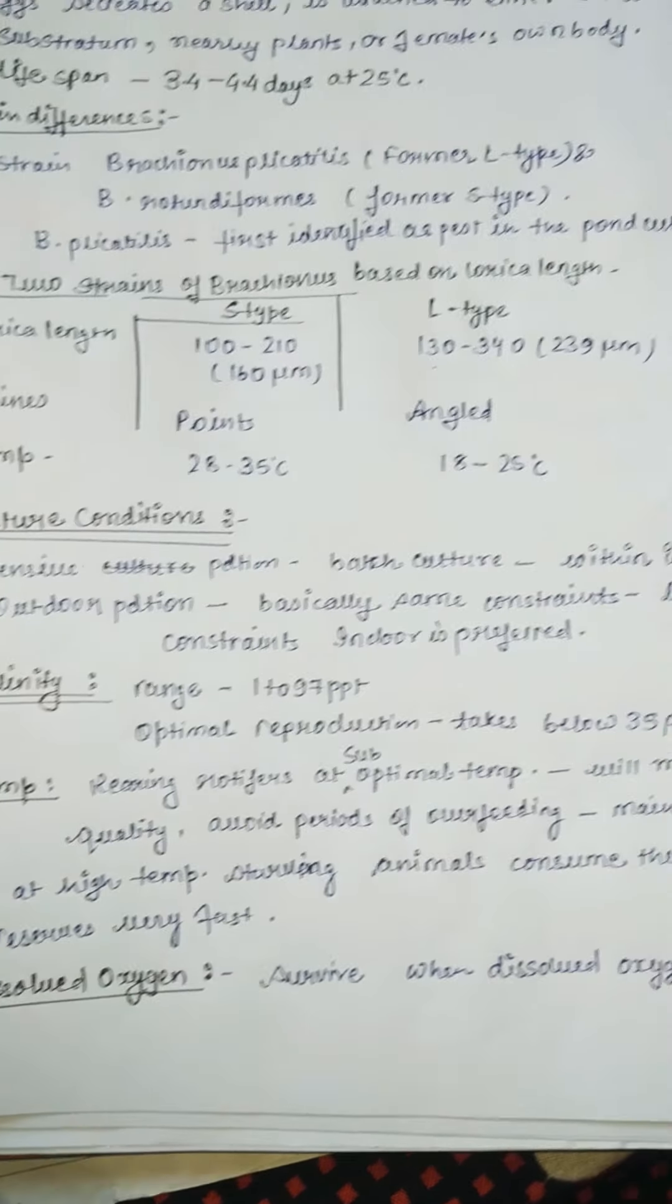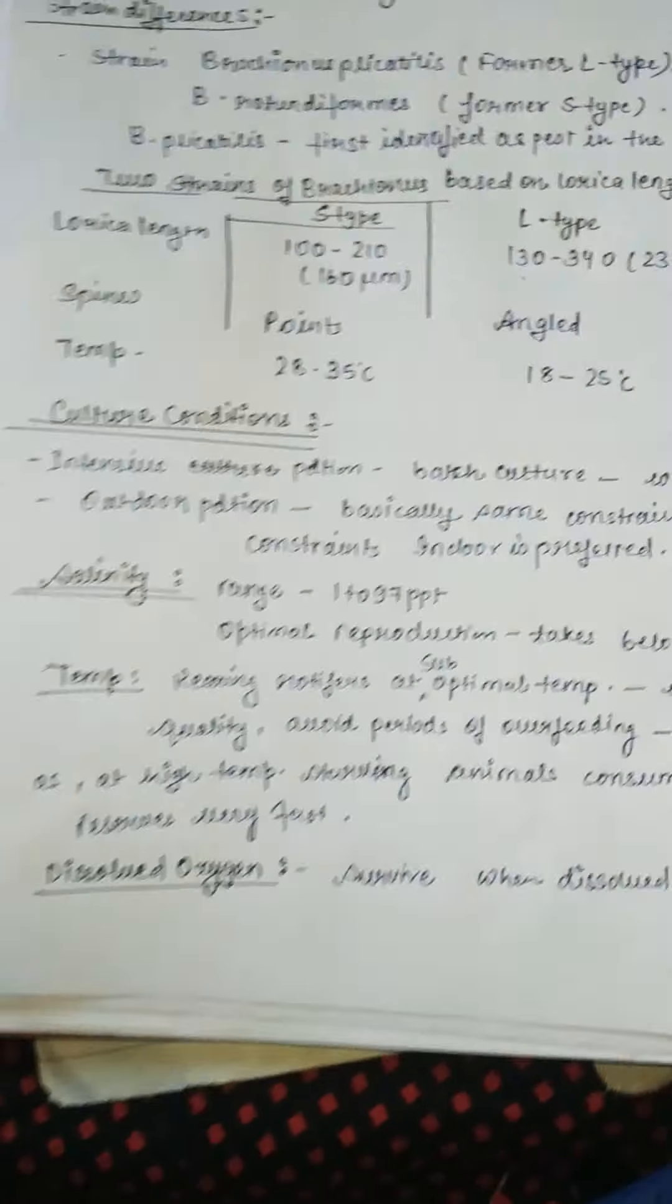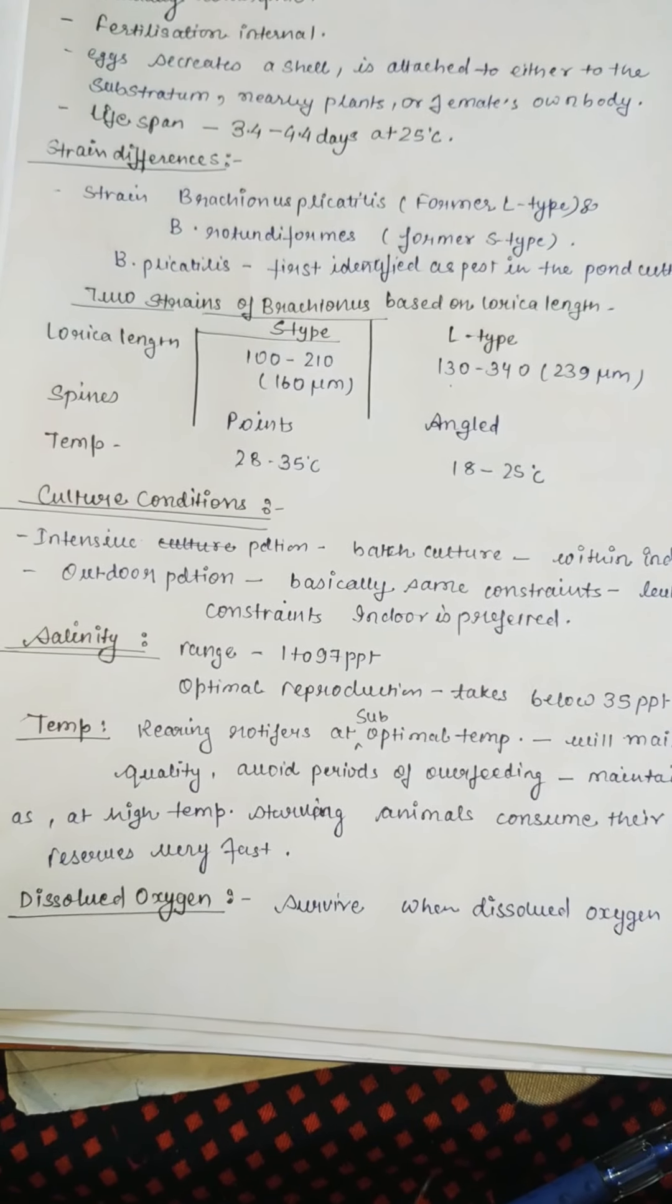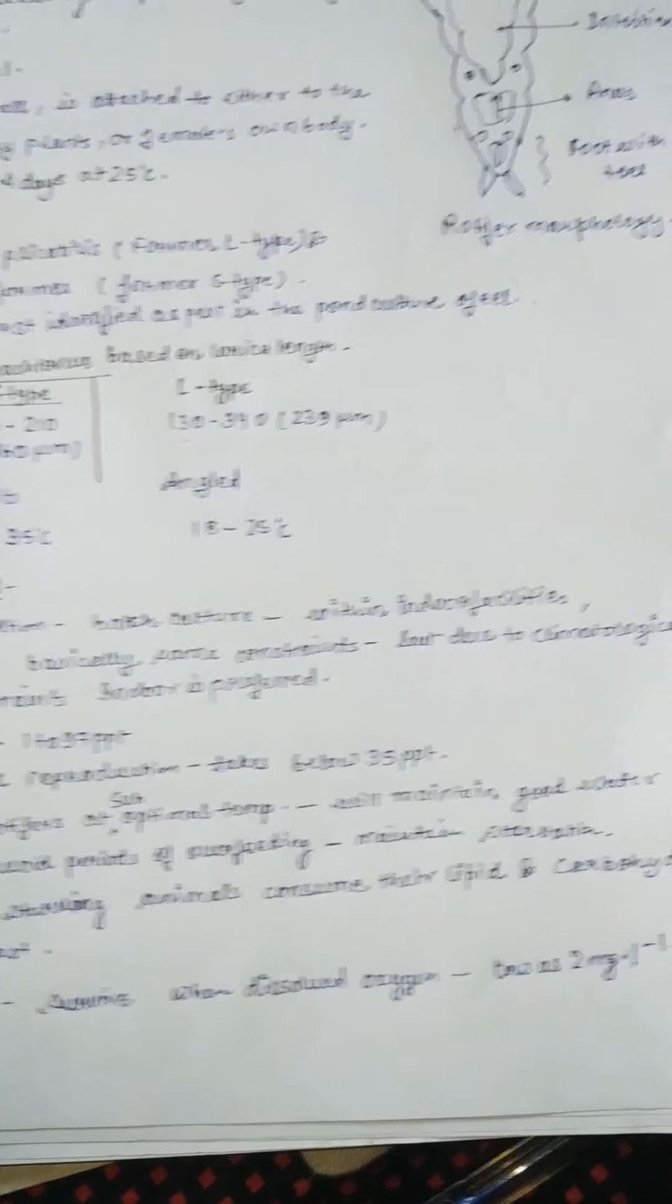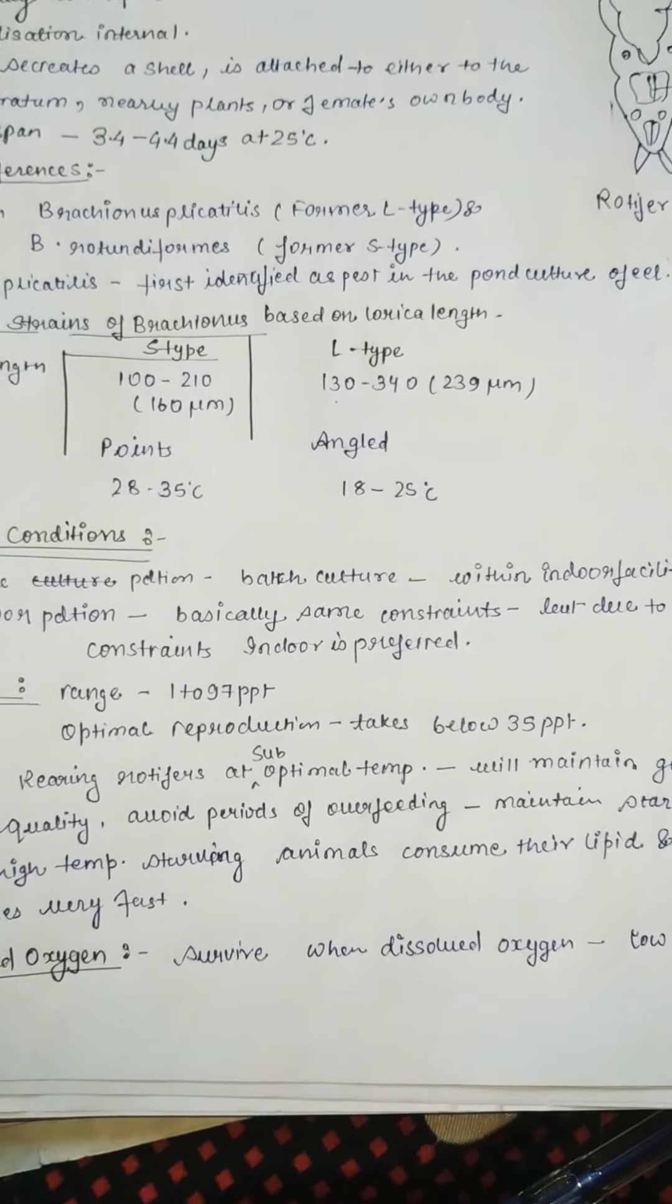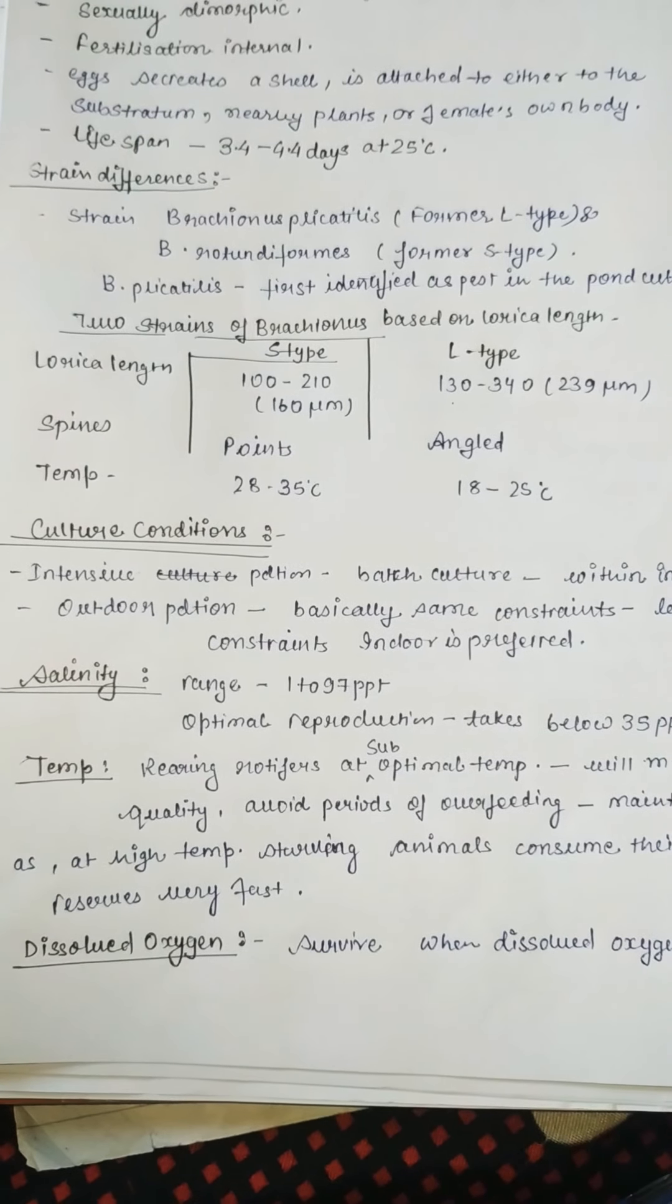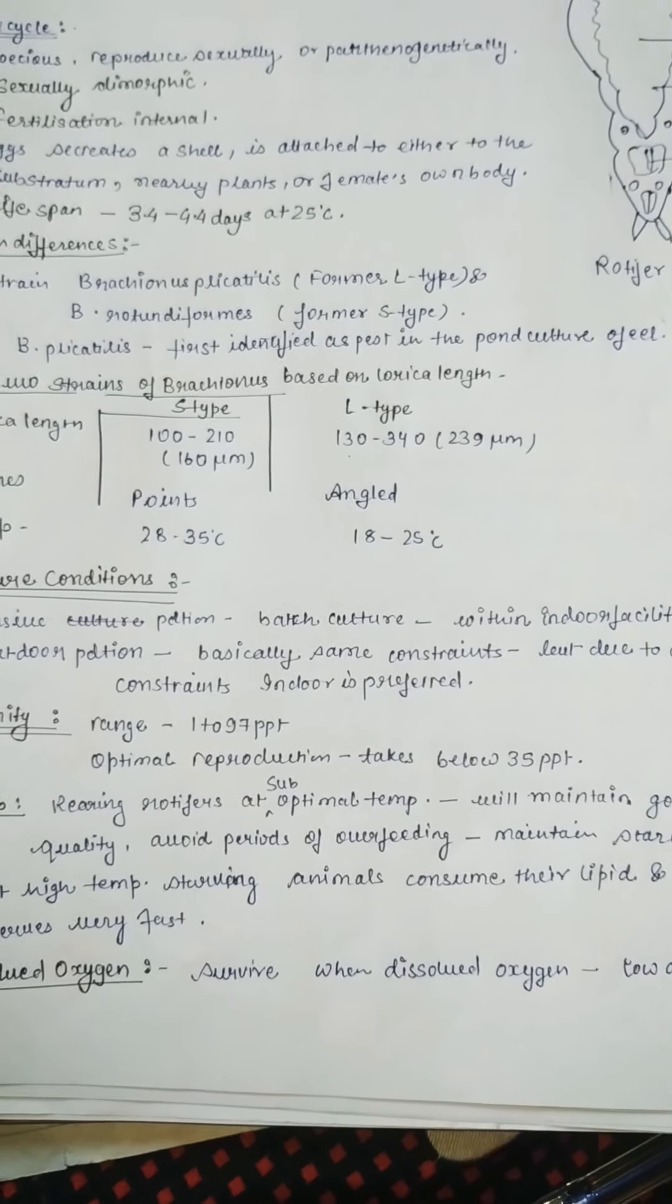Culture conditions: intensive production uses batch culture within indoor facilities. Outdoor production is also done but has some constraints that are climatological, which is why indoor is preferred - batch culture is mainly preferred. Salinity ranges from 1 to 97 ppt and optimal reproduction takes place below 35 ppt.